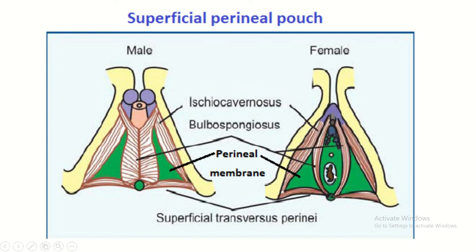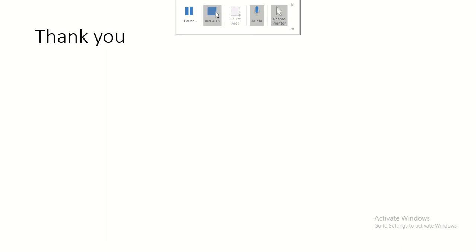In the female, the contents of the superficial perineal pouch include the bulbospongiosus muscle covering the bulb of the vestibule, the greater vestibular gland, the crura of the clitoris covered by the ischiocavernosus muscle, the superficial transverse perineal muscle, the perineal body, and a portion of the perineal membrane.